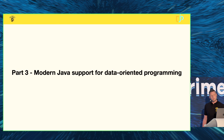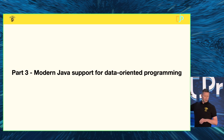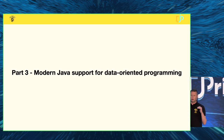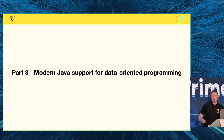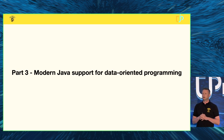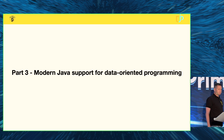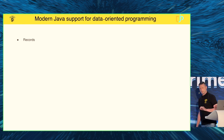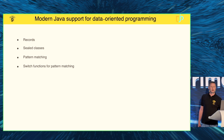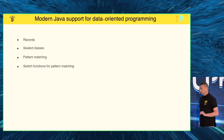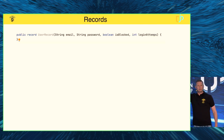So let's see what has been added to Java to support data-oriented programming. When I say modern Java, I'm talking Java 17 to 21 — 21 is almost here in September. Is anyone here working with 17 or higher? Okay, that's already quite a lot of hands. We're going to look at records, sealed classes, pattern matching, and switch expressions for pattern matching.